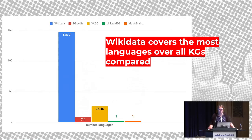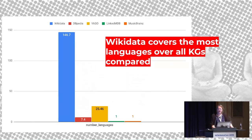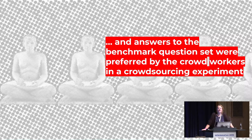From the big, widely-used knowledge graphs we looked into, Wikidata covers the most languages overall. We used a benchmark dataset called CULT, originally for DBpedia, which we translated for five knowledge graphs into SPARQL questions, then gave that to a crowd to evaluate. Overall, crowd workers preferred Wikidata's answers because they are very precise, cover most languages that the others don't, and are not as repetitive or redundant.